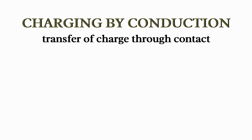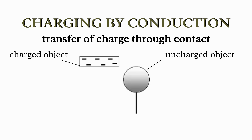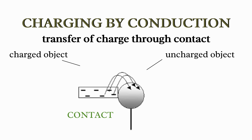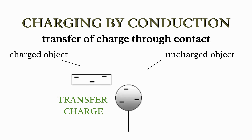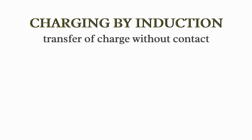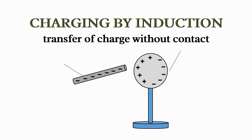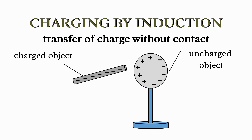Second is charging by conduction. This involves bringing a charged object into close proximity to another charged object — this is where you transfer charge through contact. And lastly, charging by induction. This process involves charging an object by merely bringing it close to a charged object. This is a transfer of charge without any direct physical contact.